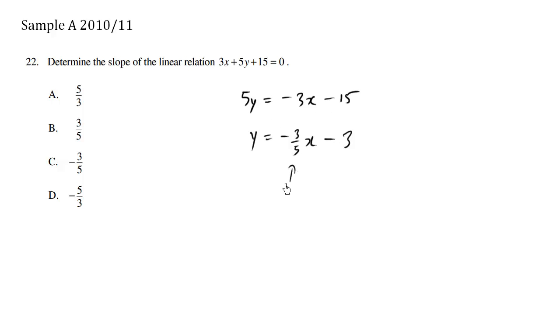So the slope here is negative 3 fifth since we have the line equation y equals mx plus b. So our y intercept is negative 3. This is the y intercept, the b value.